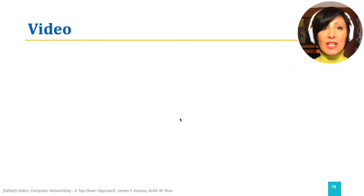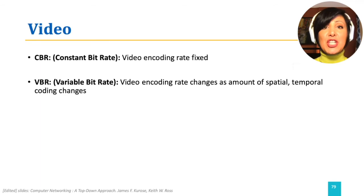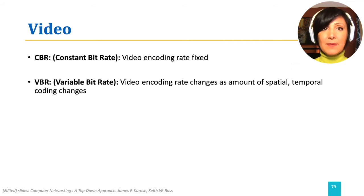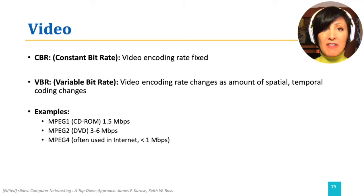Video could be encoded in constant bitrate, keeping the encoding parameters constant. It can alternatively use variable bitrate, where the rate changes as the spatial or temporal encodings change. You can check different MPEG standards as popular encoding examples. The important aspect of video streaming for the network is the data it has to send across the network to the user for successful playout. For this, a certain throughput is required from the network, and as the throughput may vary, the streaming service must be able to adapt to those changes.